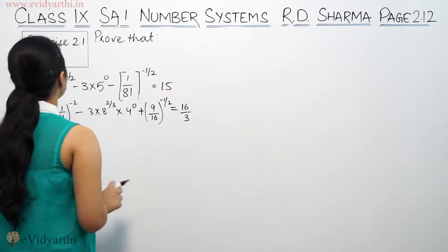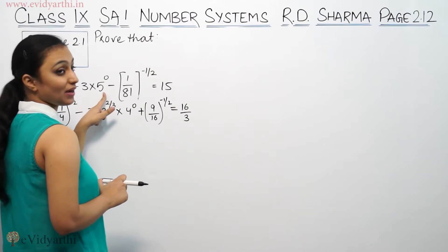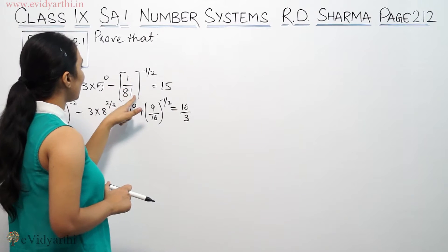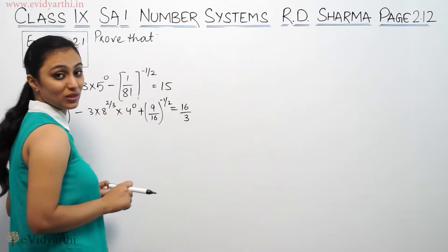It says prove that 9 raised to the power 3/2, minus 3 into 5 to the power 0, minus 1/81 to the power minus 1/2 equals to 3.